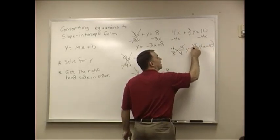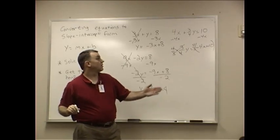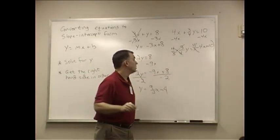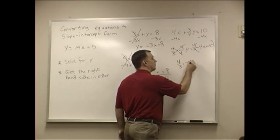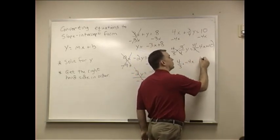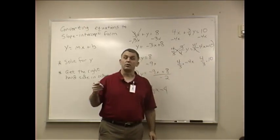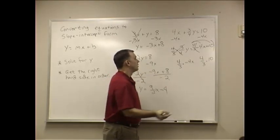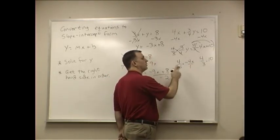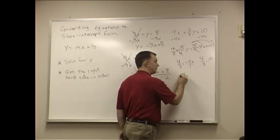So I have to multiply this side by 4 thirds. This is going to give us some ugly arithmetic over here. So we're going to end up doing 4 thirds times negative 4X. We're going to end up doing 4 thirds times 10. Because you have to do it to everything, I have to distribute this. So I'm going to put a 1 underneath this. Nothing cancels. 4 times negative 4 would be negative 16.